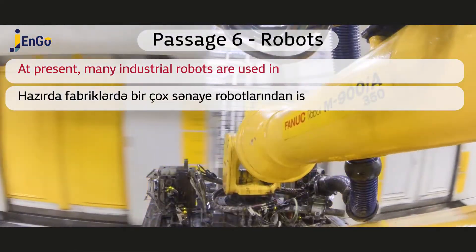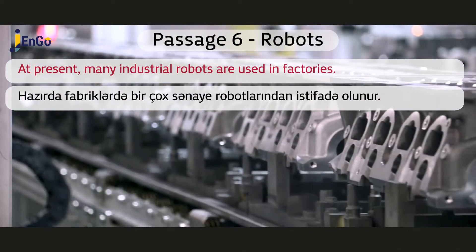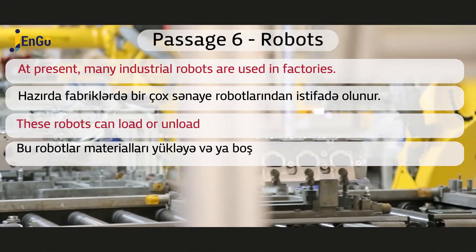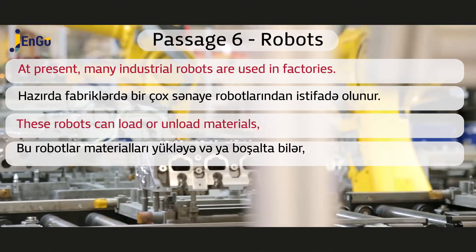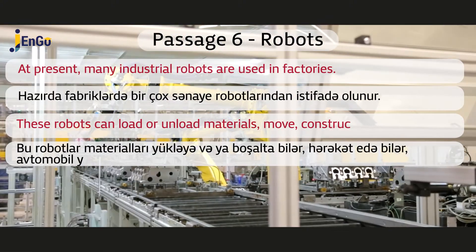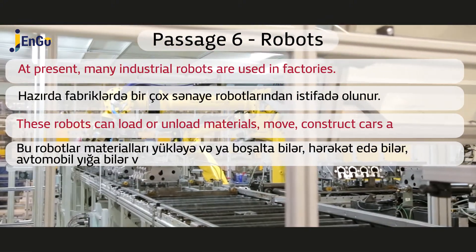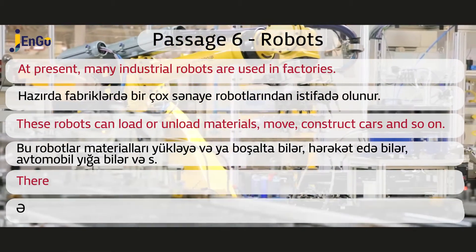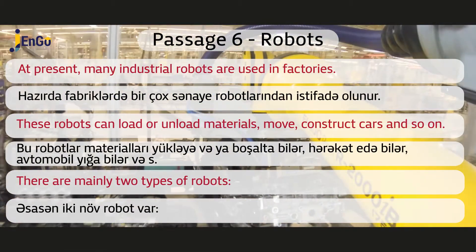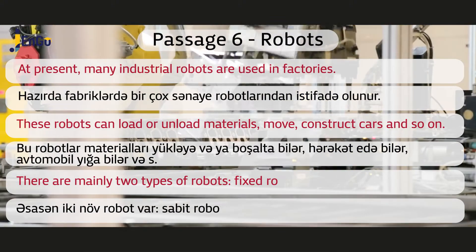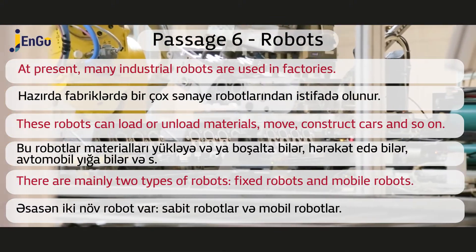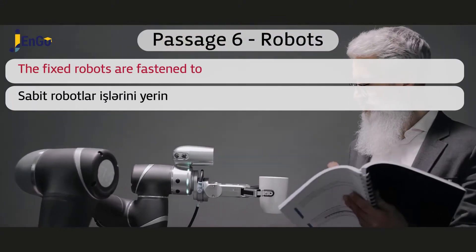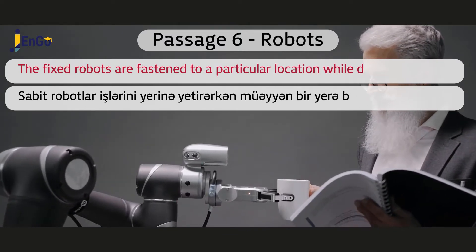At present, many industrial robots are used in factories. These robots can load or unload materials, move, construct cars, and so on. There are mainly two types of robots: fixed robots and mobile robots. The fixed robots are fastened to a particular location while doing their work.